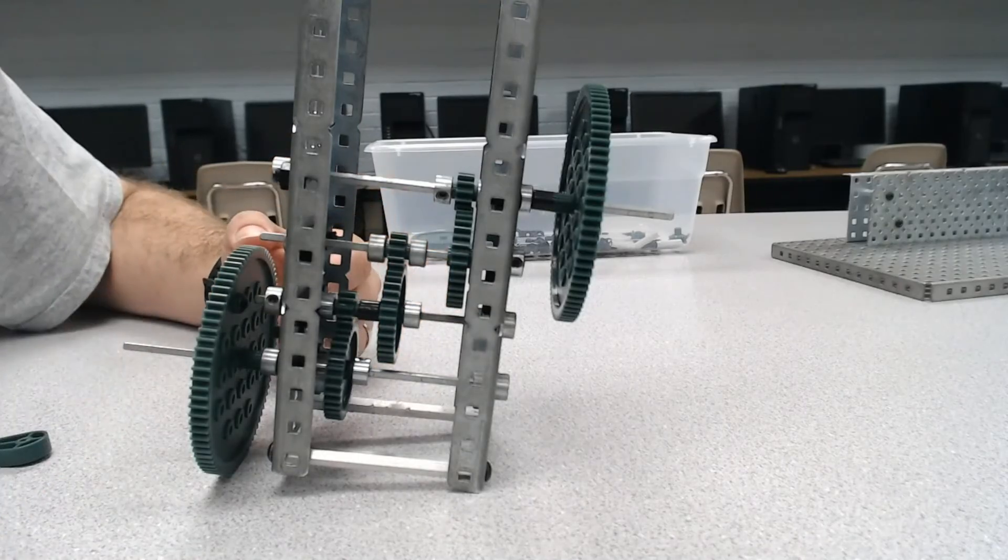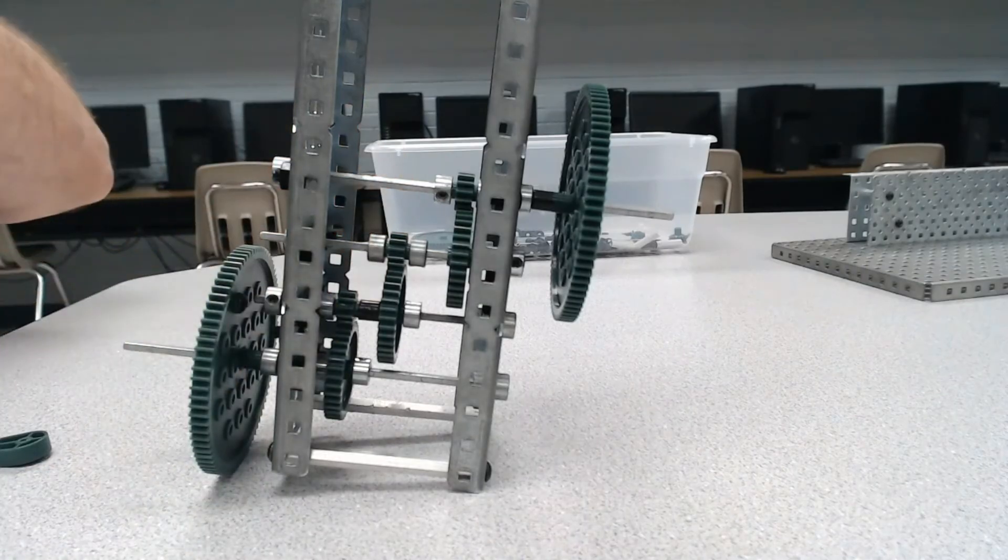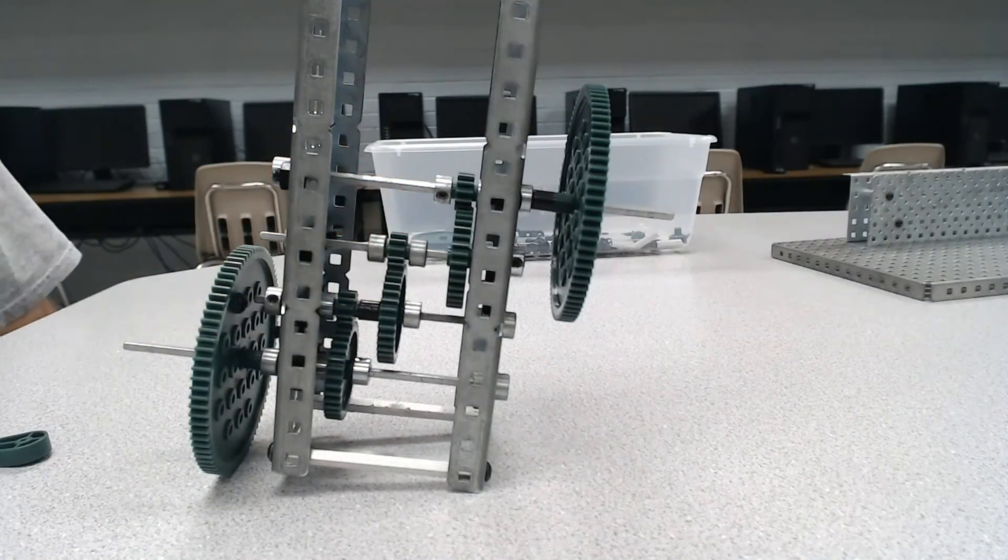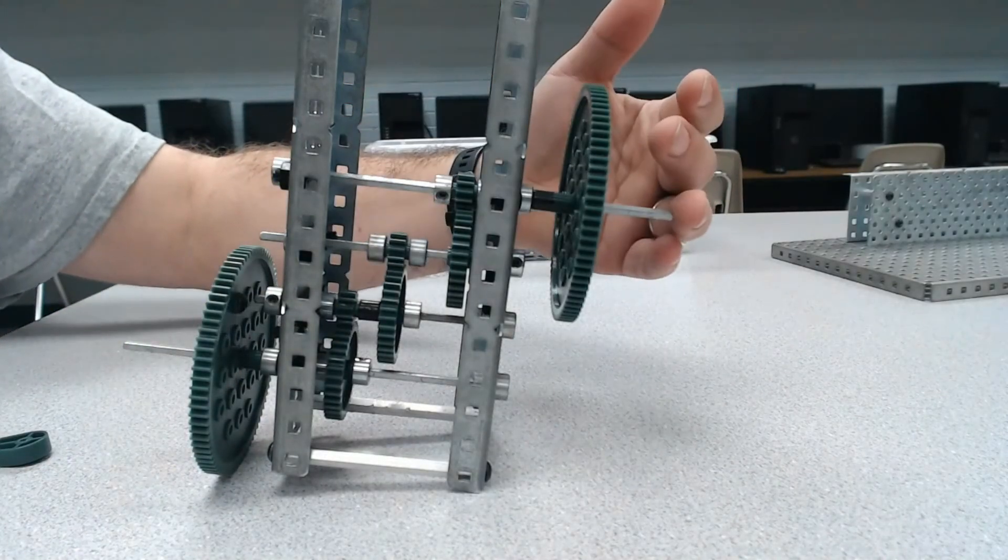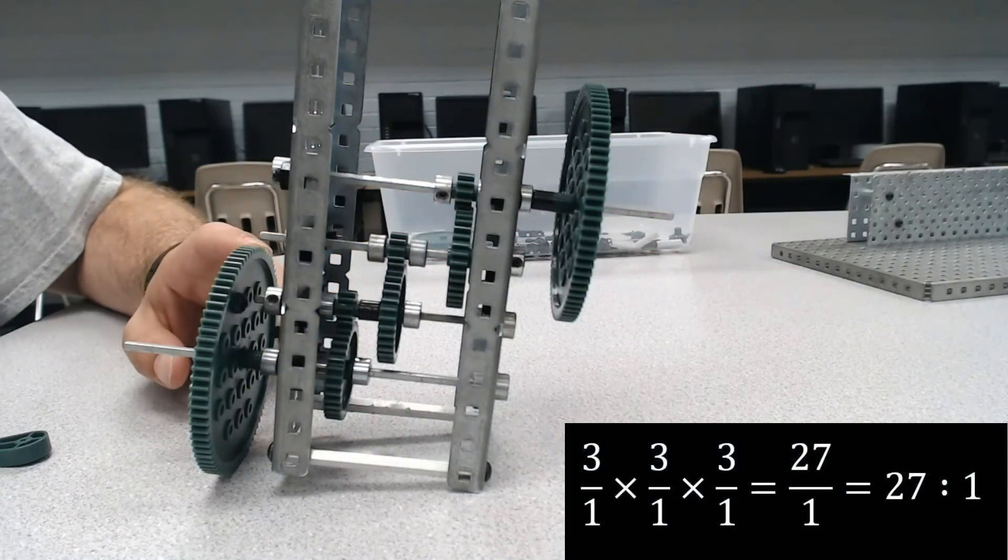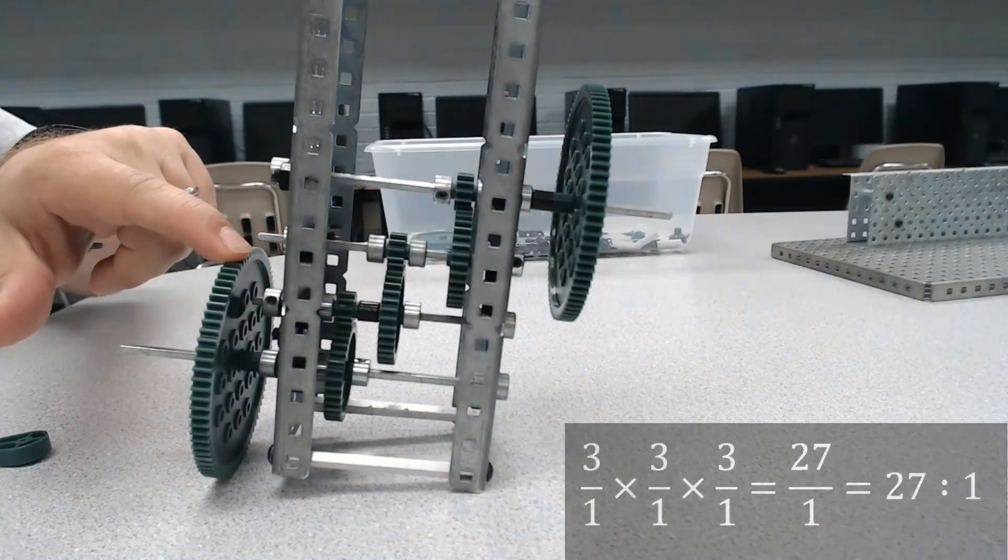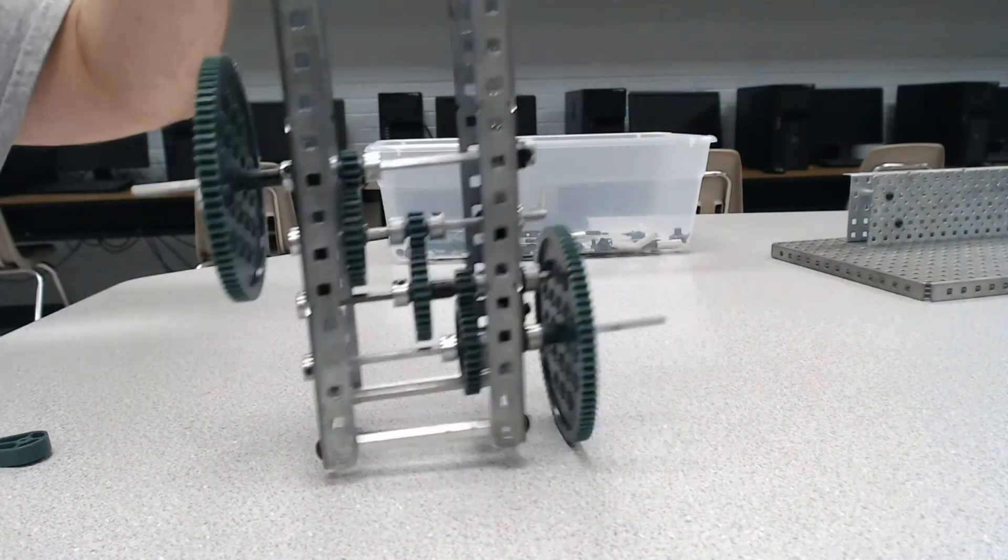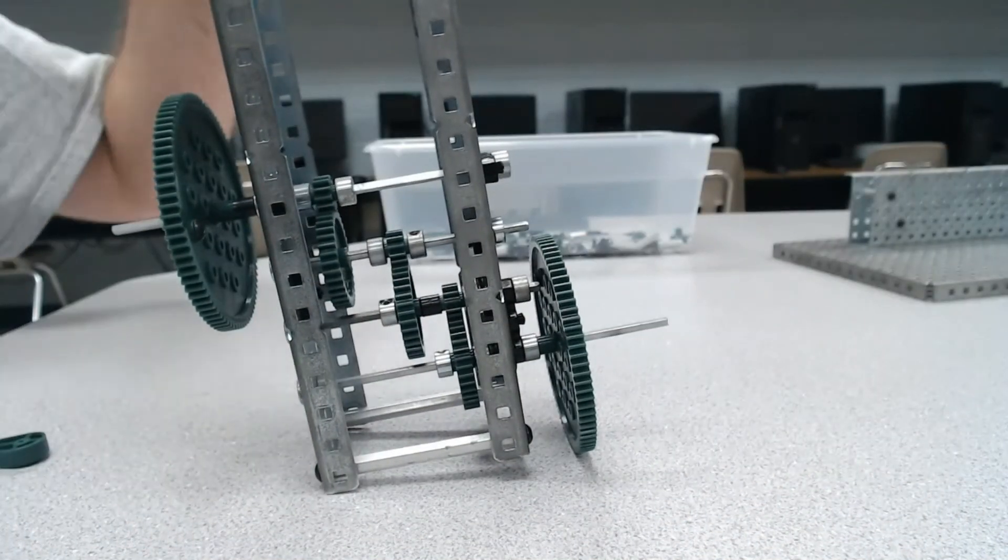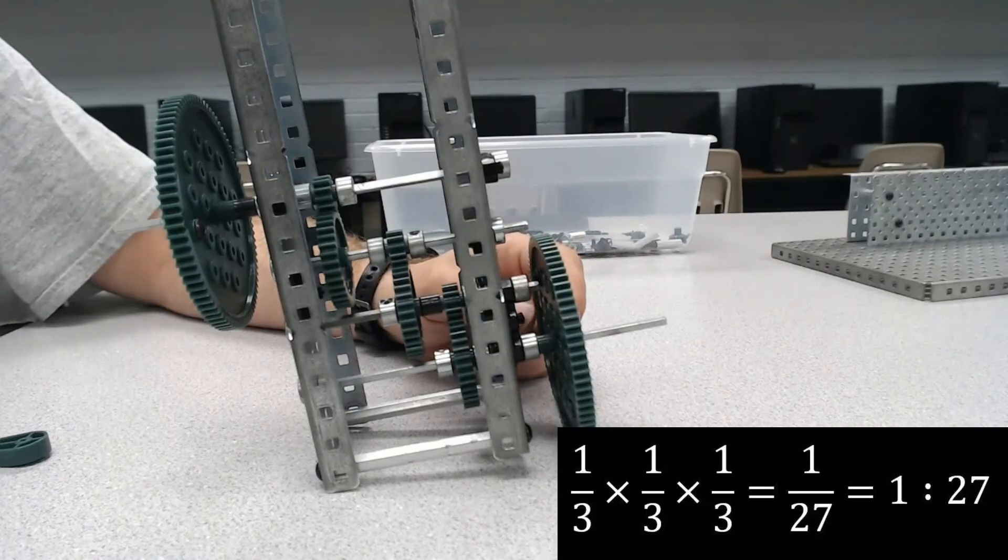So this is a compound gear system, which means we have a compound gear ratio. The compound gear ratio is calculated by taking each individual gear ratio and multiplying to find out the final gear ratio. If this is my input, I have a 27 to 1 gear ratio. 27 turns here, one turn here. If I flip this around and here is my input, I have a 1 to 27 gear ratio.